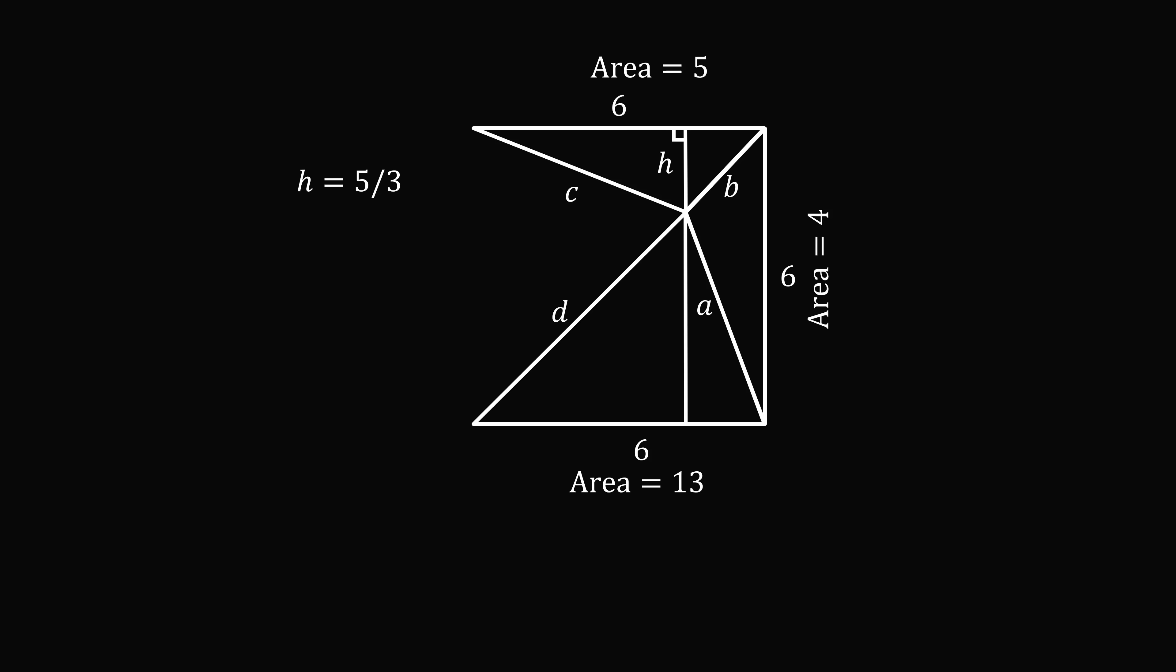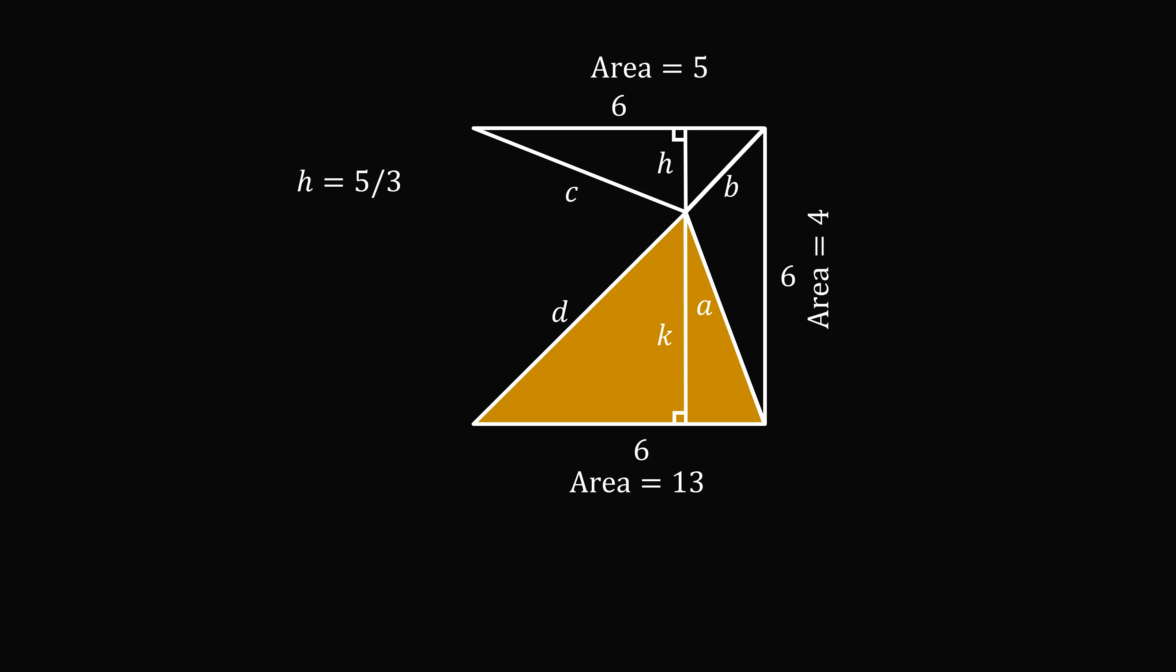Construct a height of this other triangle, and call its height equal to K. In this triangle, the area is equal to 13, so we have 6K divided by 2 is equal to 13. This means K is equal to 13 over 3.